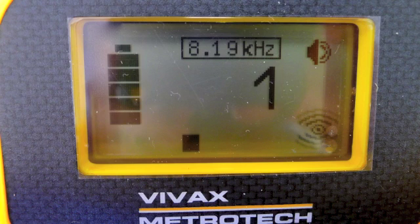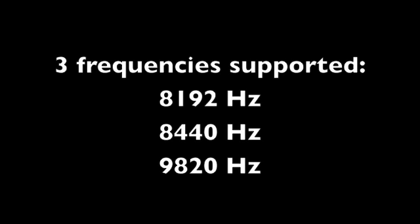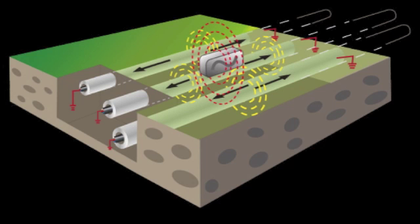Again, the transmitter will recognize that it has no cables connected, and will activate induction mode. Only three frequencies are available, the same as using a clamp. This method is not recommended, as an induced current can easily couple to other metallic lines and structures adjacent to the target line.